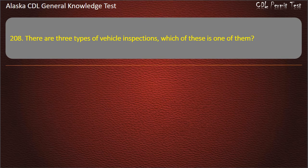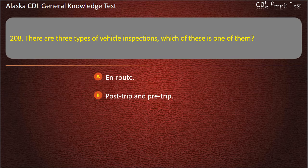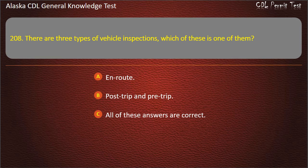Question 208. There are 3 types of vehicle inspections. Which of these is one of them? En route, post-trip and pre-trip, or all of these answers are correct. Answer: All of these answers are correct.